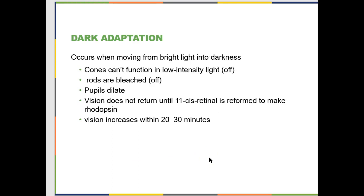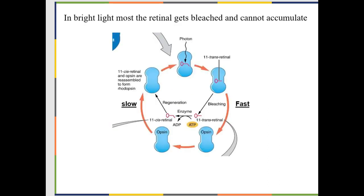Dark adaptation is the opposite. It's night, you turn off the light in a previously brightly lit bedroom, and you can't see anything. It's too dark for your cones to function, and your rods are all bleached out from the light that was just on — so neither set of photoreceptors is working. Your pupils dilate, and it's going to take 20 to 30 minutes for your vision to come back online because you have to reform all of your rhodopsin.